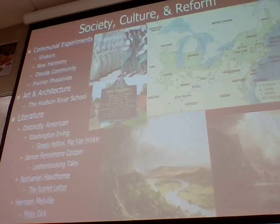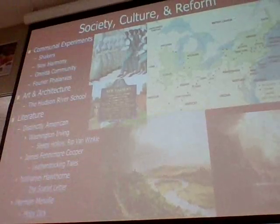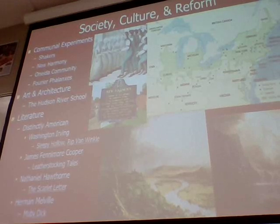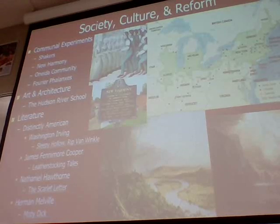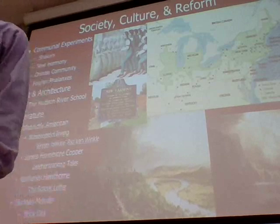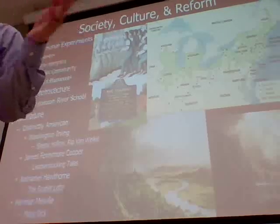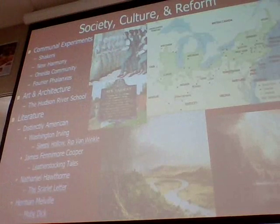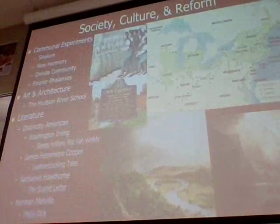Robert Owen hoped the community would provide an answer to the problems of inequality and alienation caused by industrialization. It failed like many others because of financial problems — they couldn't make enough money to pay off debts. There were also a lot of disagreements among members about how they should operate, so Owen eventually went back to Great Britain.